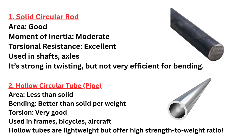Let's compare the different sections one by one. First, we have the solid circular rod. These are generally used in shafts and axles, as they provide strong twisting resistance. However, they are not very efficient for bending. Hollow circular tubes have less cross-sectional area but are very good at torsion and are used in frames, bicycles, and aircraft. Hollow tubes are lightweight but offer the highest strength-to-weight ratio.